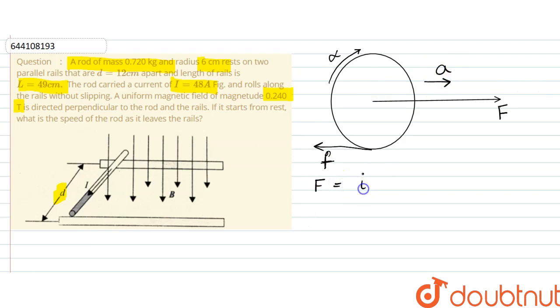Magnetic force can be written as F = IdB, where I is current, d is distance, and B is magnetic field. That would be 48 amperes × 12 × 10^-2 meters × 0.240 tesla, which equals approximately 1.38 newtons.